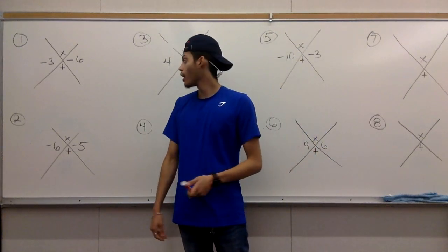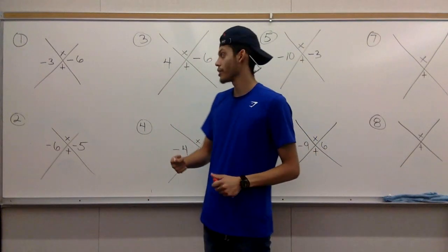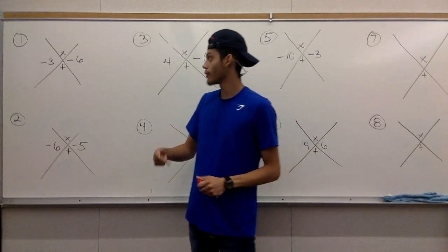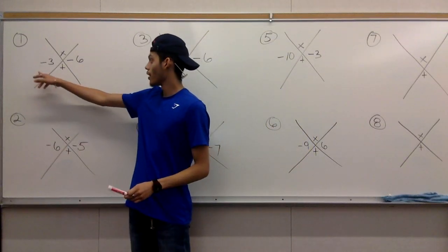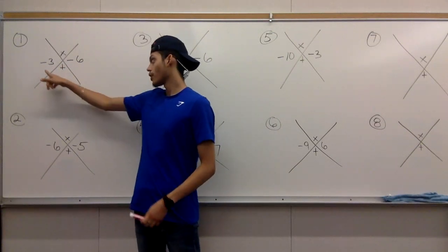So alright, we're going to start here. We're using the same pattern that we used in the previous lesson, multiplying two negatives together and then adding them at the bottom.